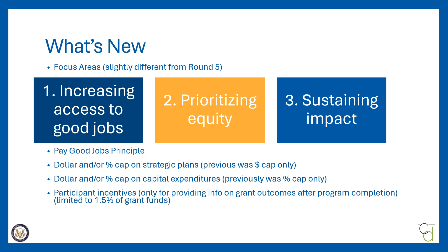New to Round 6 is the ability to provide incentives to participants, which are limited to 1.5% of grant funds, for the provision of gift cards or other types of incentive payments to participants to compensate them for their time in providing information on grant outcomes — such as credential attainment or employment status — after they complete their training program, when these data are not otherwise easily available through administrative records, for the purpose of accurately reporting performance outcomes. Grantees may not use grant funds to provide incentives for any other purposes, and incentive payments must be tied to the goals of the grant.